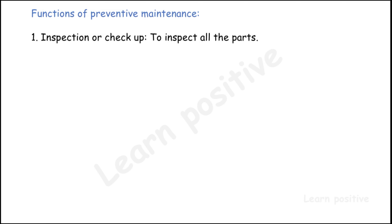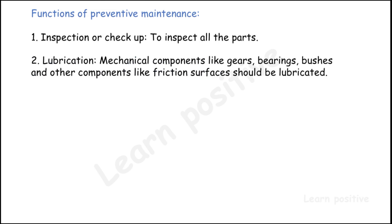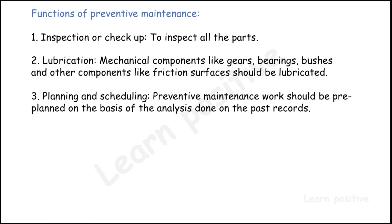The functions of preventive maintenance include: first, inspection or checkup — all components in the vehicle are inspected. Second, lubrication — mechanical components like gears, bearings, bushes, and other friction components must be lubricated properly; some are lubricated with oil, others with grease. Third, planning and scheduling — preventive maintenance work should be pre-planned on the basis of analysis done on past records.